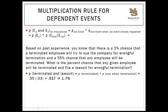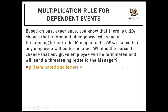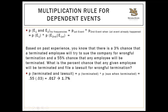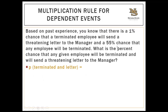Pause the video and give this example a try. The probability of being terminated is 0.55, and the probability of sending a threatening letter once terminated is 0.01. So 0.55 times 0.01 equals 0.006 — a 0.6% chance that any given employee will be terminated and then send a threatening letter. This is less likely than the previous example because only 1% of terminated employees send a threatening letter, compared to 3% who sue.